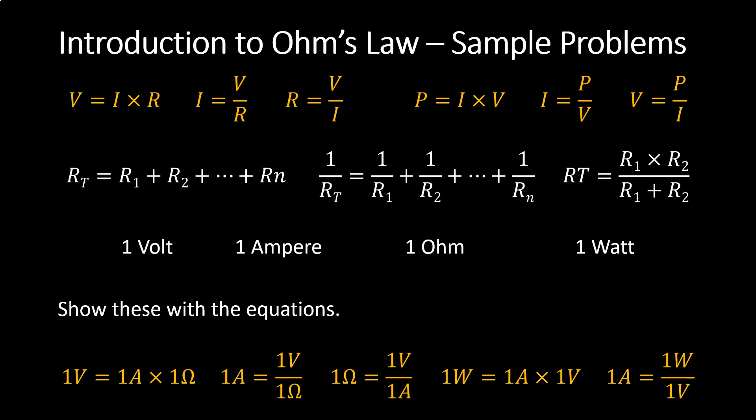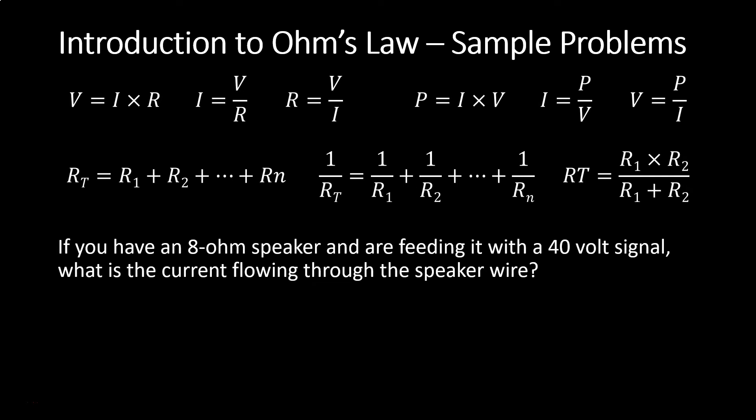Now we're going to do some practical applications using these equations. The first one: if you have an 8 ohm speaker and you are feeding it with a 40 volt signal, what is the current flowing through the speaker wire? Look at what is given — an 8 ohm speaker is the resistance, and a 40 volt signal is the voltage. You need to solve for current, which is I. The equation is I equals V over R, so 40 volts divided by 8 ohms equals 5 amps.